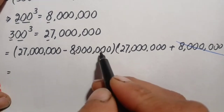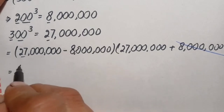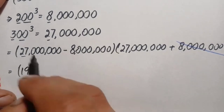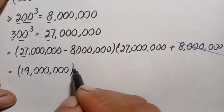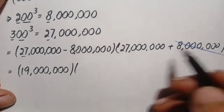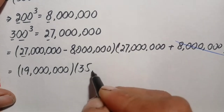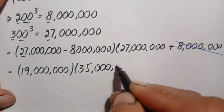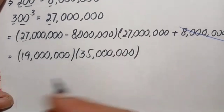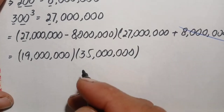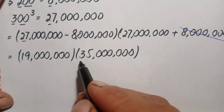There are six zeros in each number. We subtract only the digits: 27 - 8 = 19, so 19 followed by six zeros, giving 19 million. For the addition, 27 + 8 = 35, giving 35 million. To multiply these two numbers, we keep 19 million and break 35 million into its place values: 30 million plus 5 million.